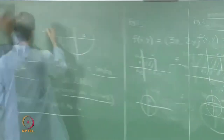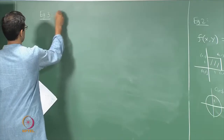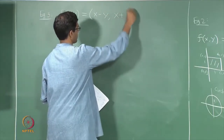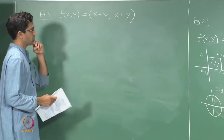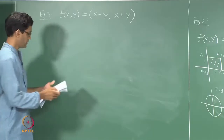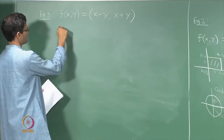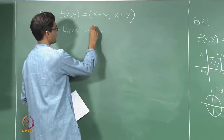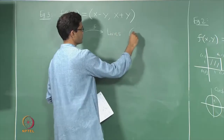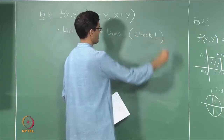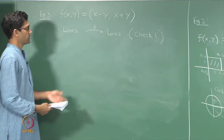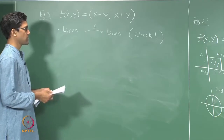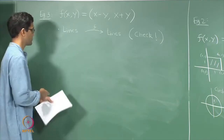Now let us do one more example — Example 3. The function f(x, y) is defined to be (x − y, x + y). Using the formula for what the function does, let us study this using the same sets of points. First, what does this function do to lines on the plane? I claim that lines map to lines — again, this is an exercise to check using the same calculation: write the equation of a line, find what equation x' and y' satisfy given x' = x − y and y' = x + y.